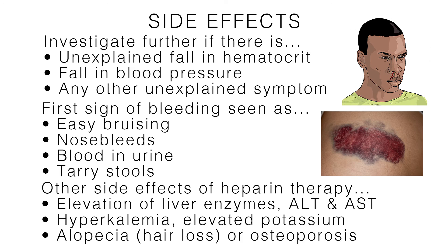The most common adverse effect of heparin is bleeding. Hemorrhage can occur at virtually any site in the patient receiving heparin therapy. Therefore, an unexplained fall in hematocrit, fall in blood pressure, or any other unexplained symptoms should lead to further investigation of possible bleeding. The first sign of bleeding is usually seen as easy bruising, nosebleeds, blood in the urine, or tarry stools.